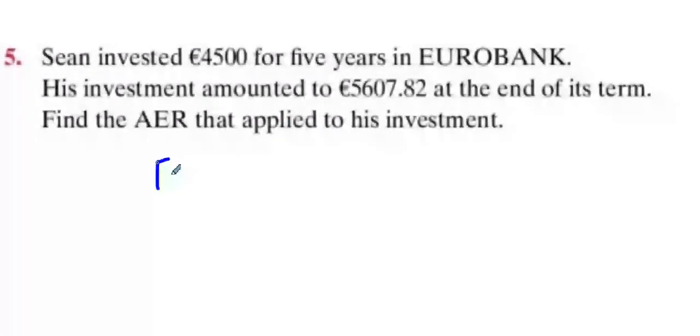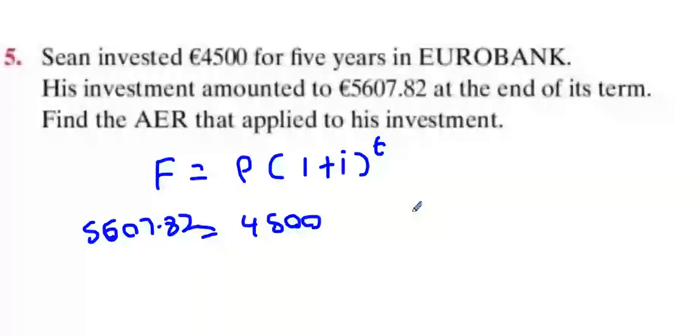We're going to use the formula F equals P times 1 plus i to the power of t. Now we're going to invest 4,500 euros and it amounts to 5,607.82, so that's 1 plus i, which we don't know, so we're just going to call it x. We know what t is - it's five years.